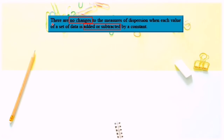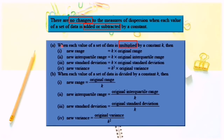The conclusion is: there are no changes to the measures of dispersion when each value of a set of data is added or subtracted by a constant. When each value of a set of data is multiplied by a constant k, then the new range, new interquartile range, and new standard deviation equal the original value times the constant. Whereas for new variance, the original variance must be multiplied by the square of the constant.